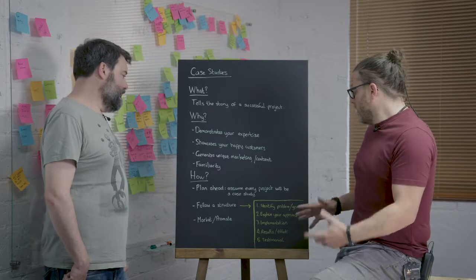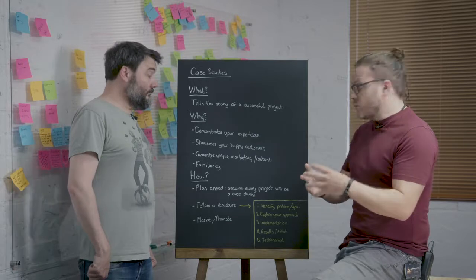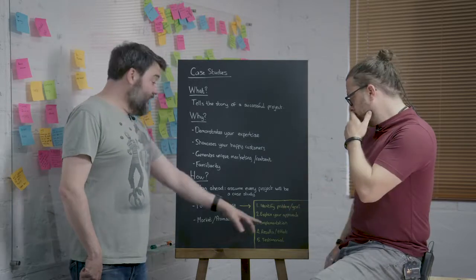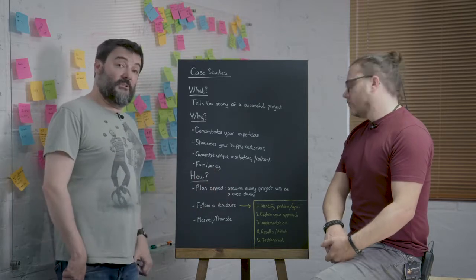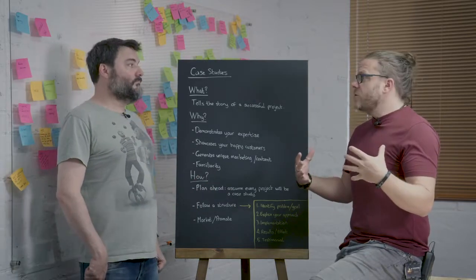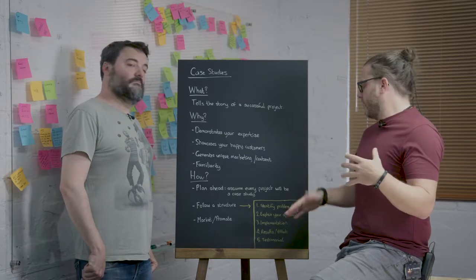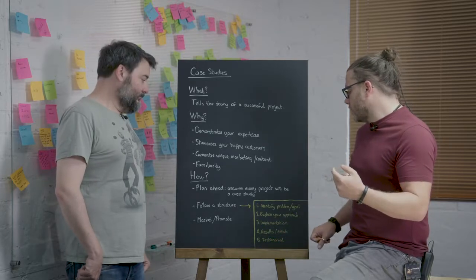So number one, identify the problem or the goal of the project. So what are you trying to achieve for the customer? Number two, explain your approach and how you're going to work through that project. How you implemented it. So what did you do? What actual parts of the project did you deliver? How did you begin to solve these problems and goals?